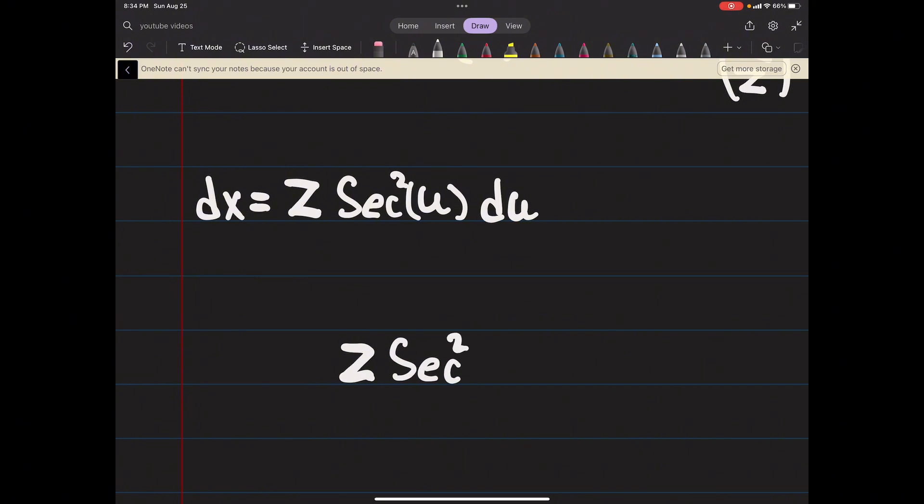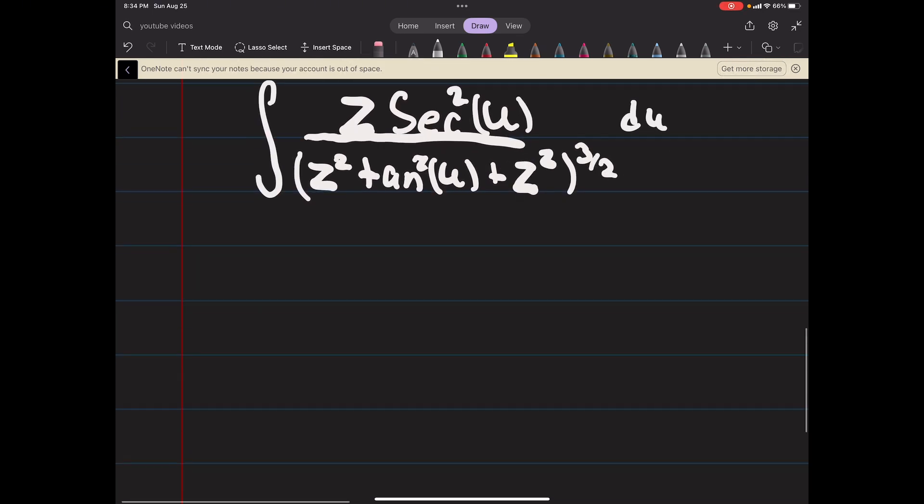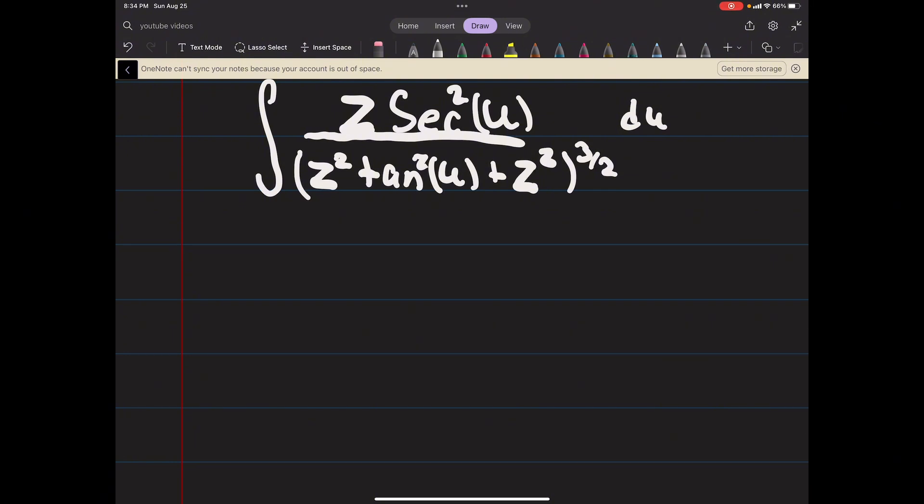Now you could substitute this in. You would have z secant squared u all divided by z squared tangent squared u to the three halves du. This is just a normal trig substitution integral. You could factor out that z and it becomes a much simpler integral. Long story short, if you want to work that out you can.